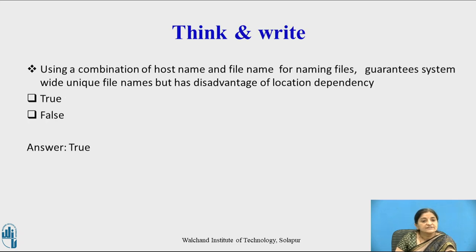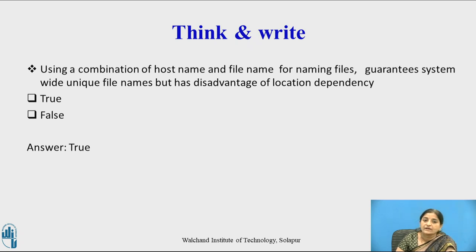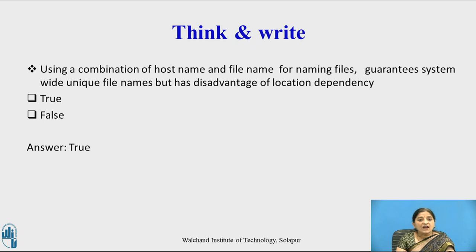Now let's pause and consider the review question: Using a combination of host name and file name for naming files guarantees system-wide unique file names, but has the disadvantage of location dependency. This refers to the very first approach — concatenating the host name with the file name. This generates unique file names because all host names have unique IP addresses, but there is a disadvantage of location dependency: if a file moves from one system to another, its name completely changes. The answer is true.